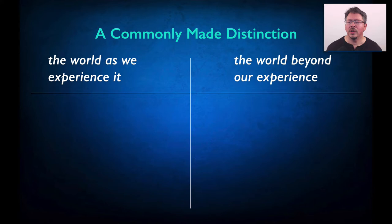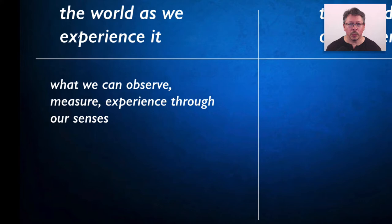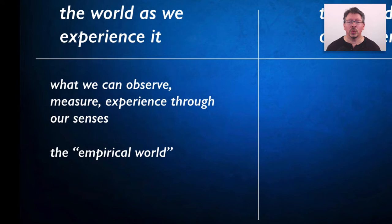Here's a commonly made distinction that we can all agree is important for science. It's the distinction between the world as we experience it and the world beyond our experience. One way that we talk about the world as we experience it is to focus on how the world is revealed to us through sensory experience — what we can perceive, observe, measure, and detect through our senses. We often use the word empirical to describe the world as we experience it. An empirical fact is a fact that can be verified through, or is grounded in, sensory experience.